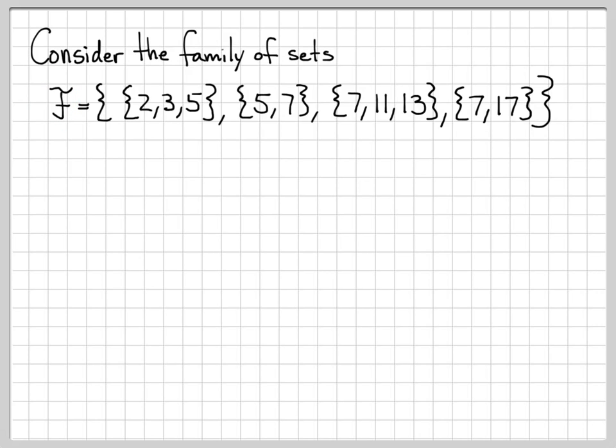Very specifically here, we have one element of the family of sets is this element right here, and that element is itself a set. It's the set whose elements are 2, 3, and 5. Similarly, this is an element of F, but it itself is a set. It's the set that contains elements 5 and 7. So really, F is just a set whose elements are all sets themselves. That's all that means. It's a little intimidating to use this fancy F symbol, but that's all it means.